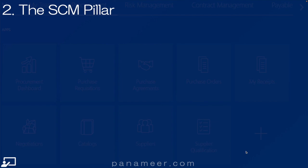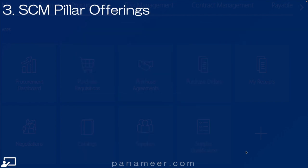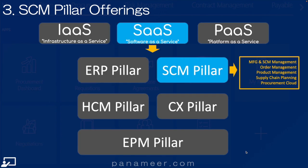Slide two — the SCM pillar. The SCM pillar is part of Oracle ERP Cloud's SaaS, or Software as a Service, applications. For more information or to understand what SaaS is, click the link above. Slide three — SCM pillar offerings. Here are the main offerings belonging to the supply chain and manufacturing pillar.